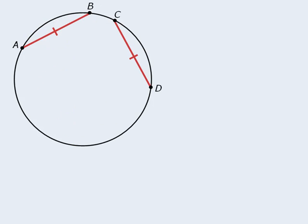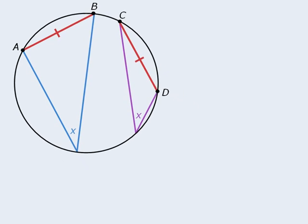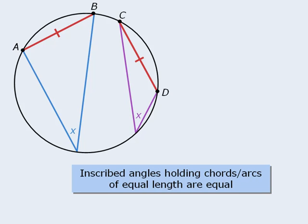The next property involves chords of equal length. If one inscribed angle holds one chord, and another inscribed angle holds another chord of the same length, then both inscribed angles will be equal. The property can be summarized as follows: inscribed angles holding chords of equal length are equal.